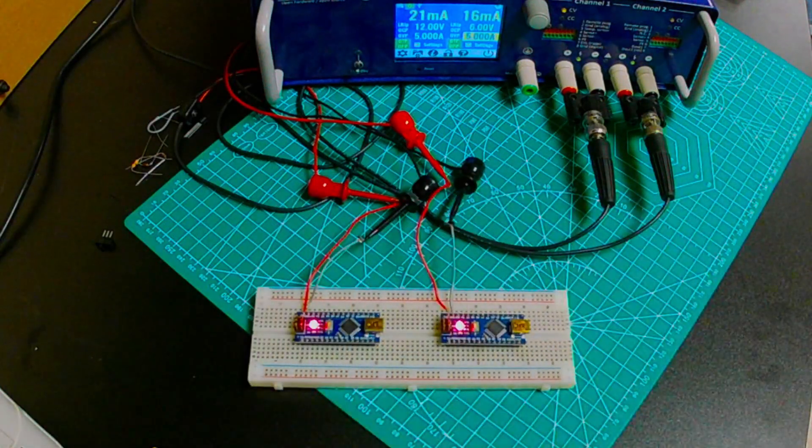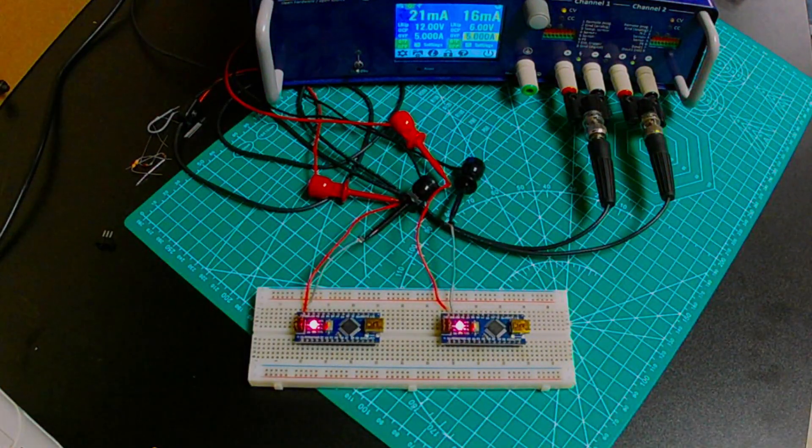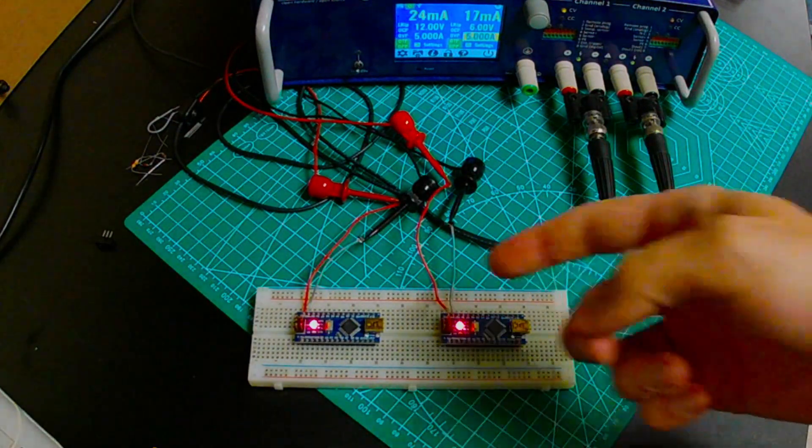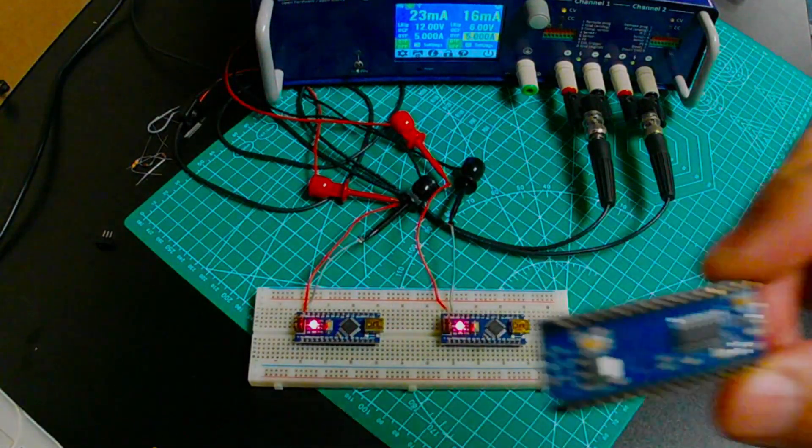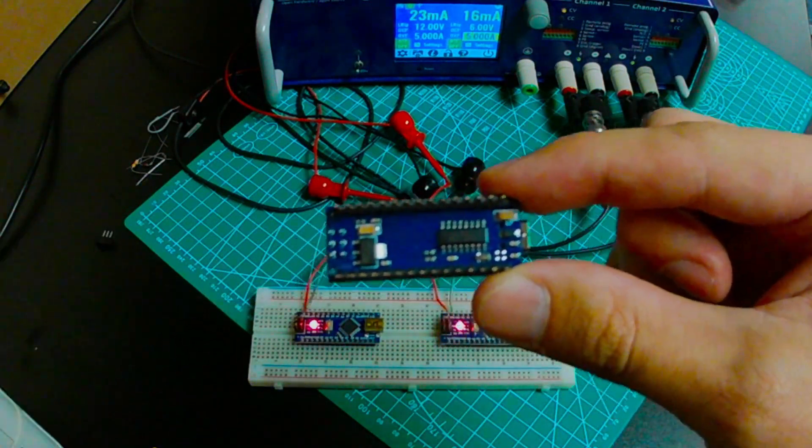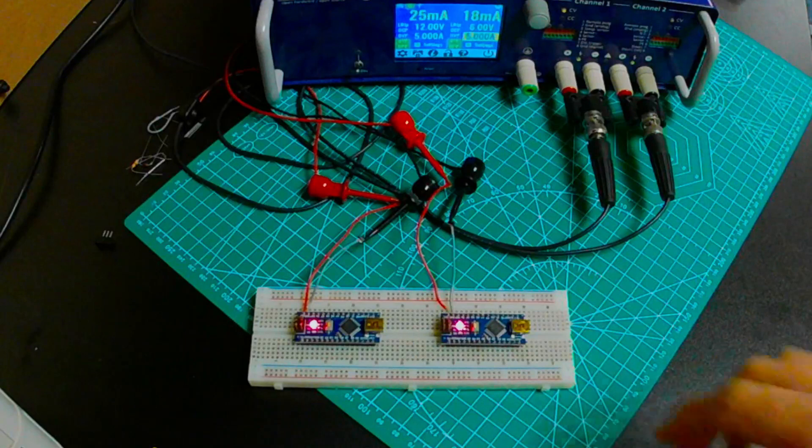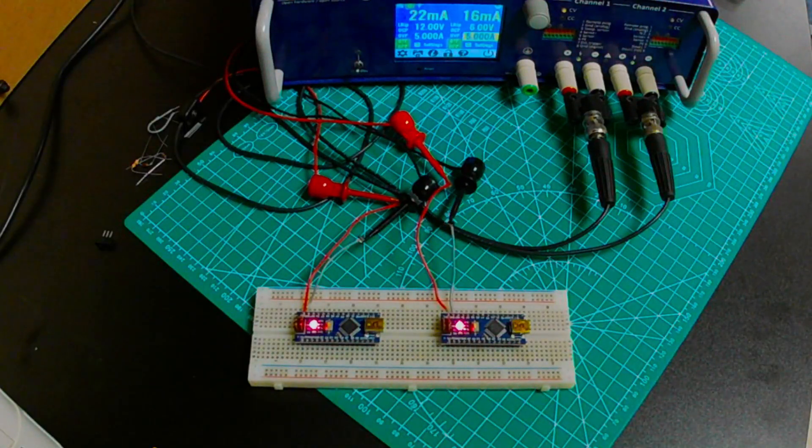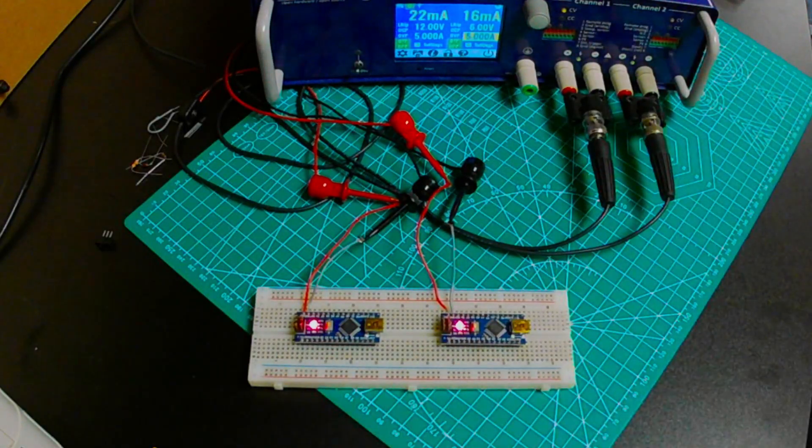So why is that? Well, the voltage on the VIN is regulated by something called a low dropout regulator, or that's this component right here. And those low dropout regulators are really handy circuits, but they do come at a bit of a cost.